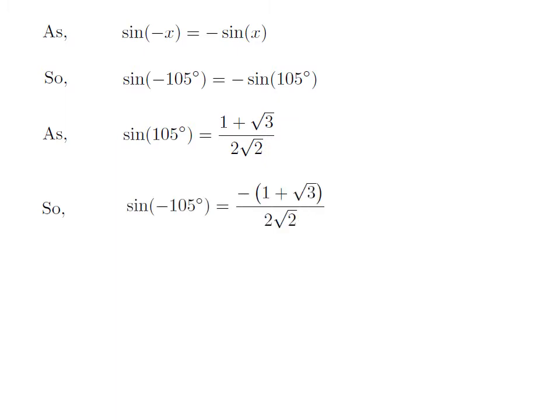So, we get the value of sin(-105°) equals -(1 + √3) / (2√2).